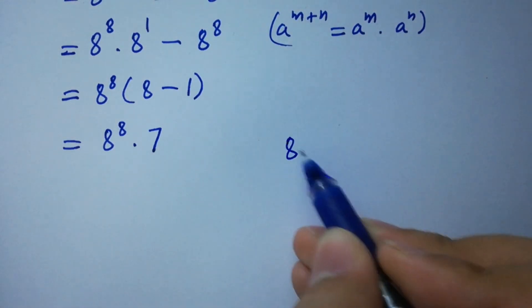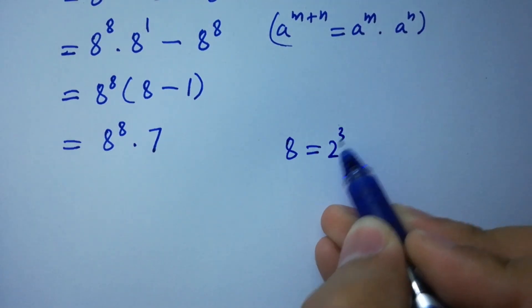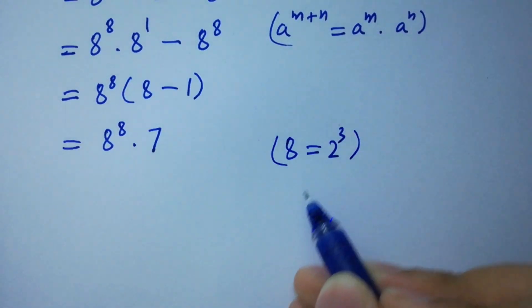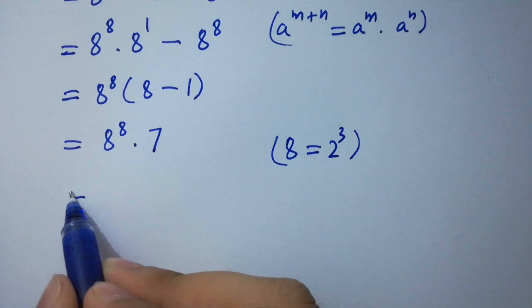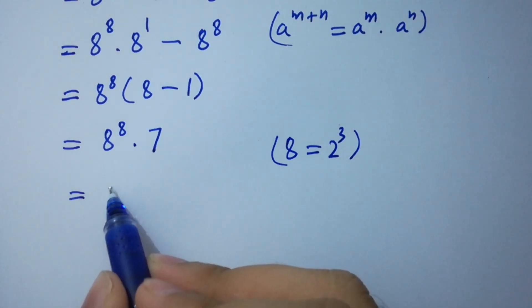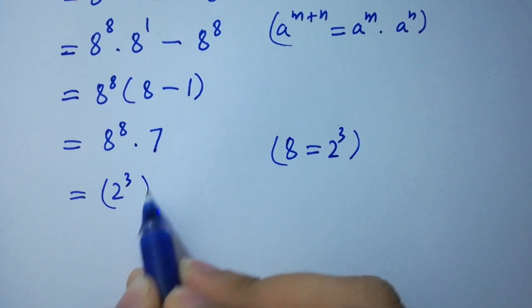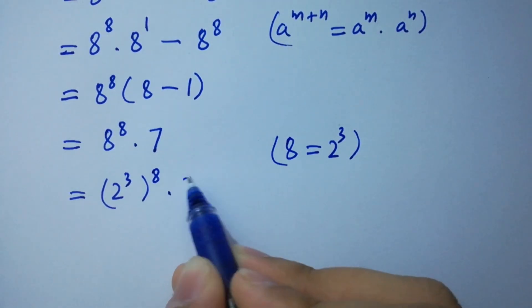As 8 equals 2 cubed — 2 times 2 is 4, 4 times 2 is 8 — we have here 2 cubed to the power 8, times 7.